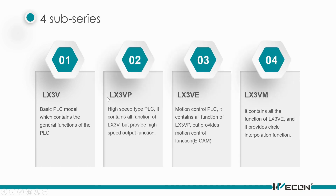So far, Vicon has released 4 series POCs, namely 3V, 3VP, 3E, and 3VM. 3V is the basic POC model which contains the general functions of the POC. 3VP is the high-speed type POC — it contains all functions of 3V but provides high-speed output. 3VE provides the motion control function, which we call ECAN. 3VM provides the circle interpolation function and also contains all functions of 3VE.